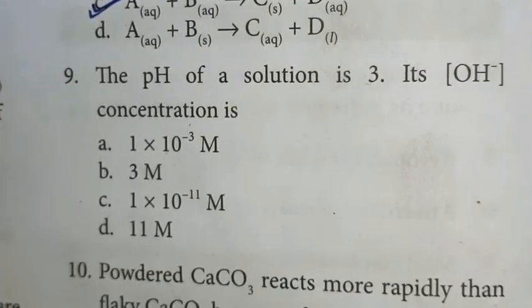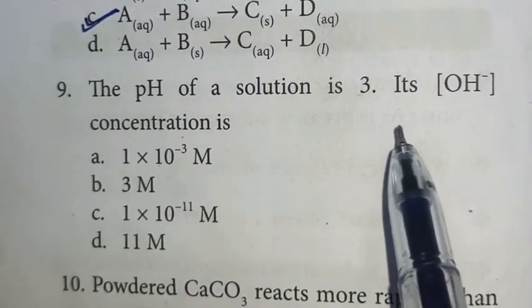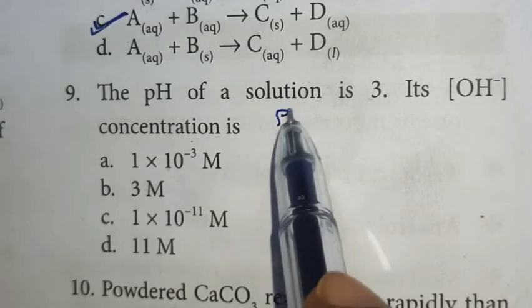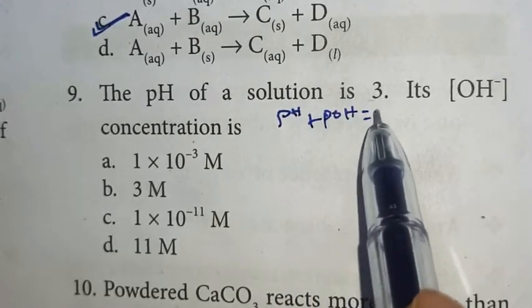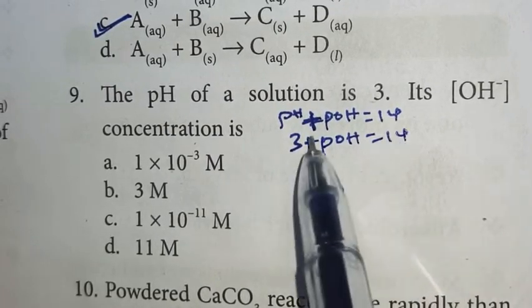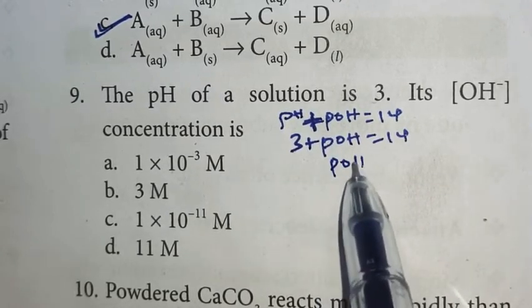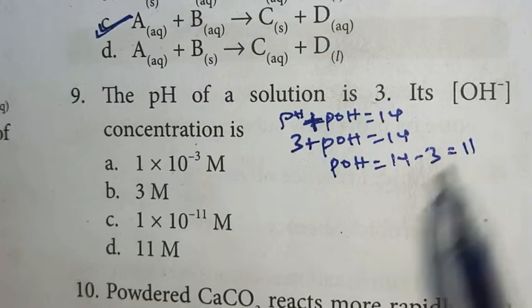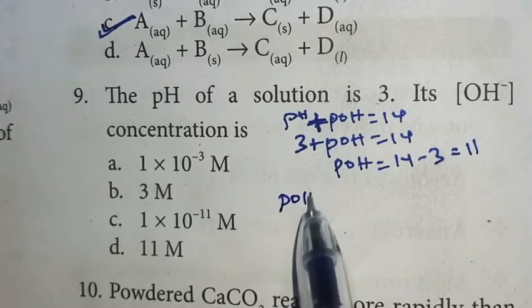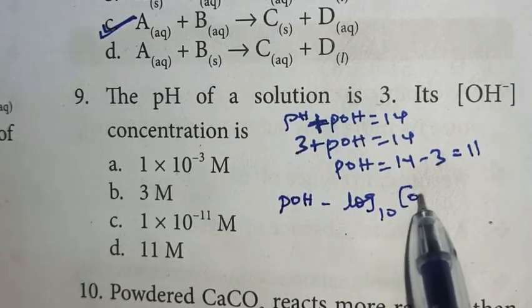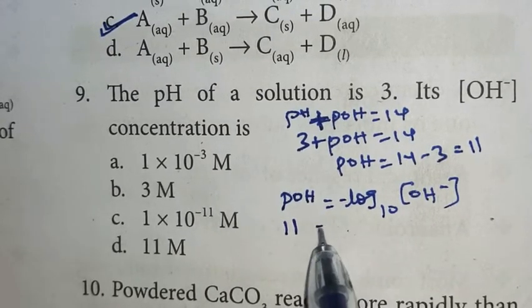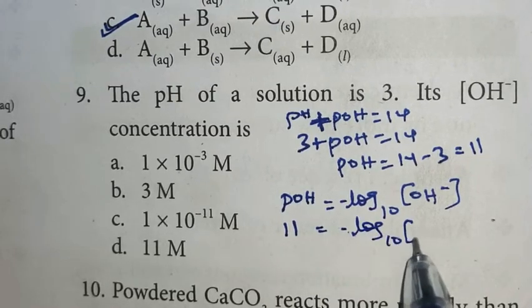Ninth question: The pH of a solution is 3. Its hydroxide concentration is what? We know the formula: pH plus pOH equals 14. The pH value is 3 plus pOH equals 14. Now 3 will go to the other side, so pOH equals 14 minus 3, which is 11. Now they are asking for hydroxyl concentration, so the formula is pOH equals minus log10 of hydroxyl concentration. pOH 11 equals minus log10 OH minus.